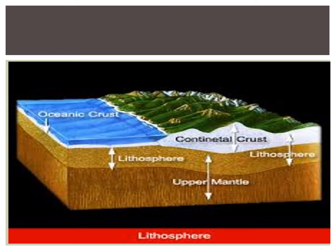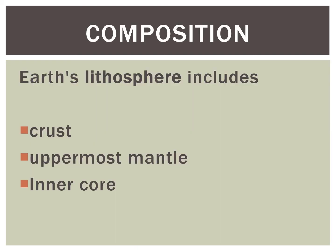Yet another diagram showing the lithosphere and the upper mantle. You can see here the earth's surface — the outermost is the continental crust and on the other side is the oceanic crust. Beneath this is the lithosphere and then it extends to the upper mantle. So the lithosphere is basically composed of the crust, the uppermost mantle area, and the inner core.